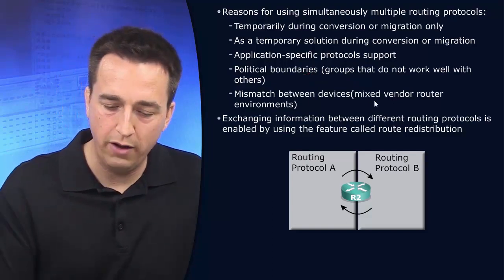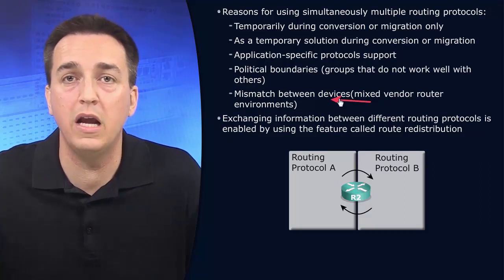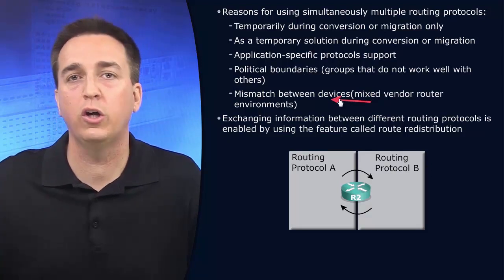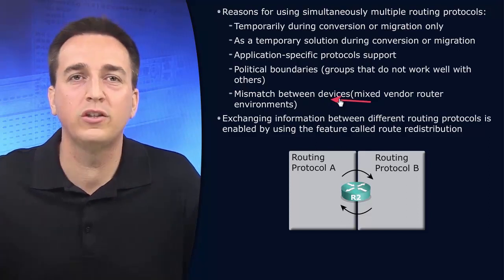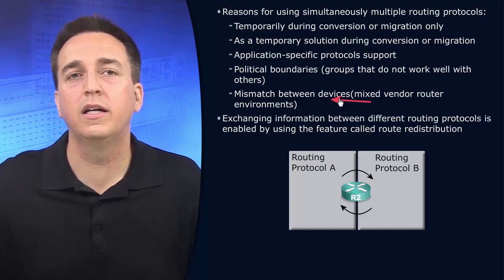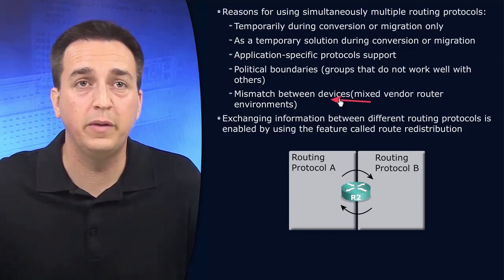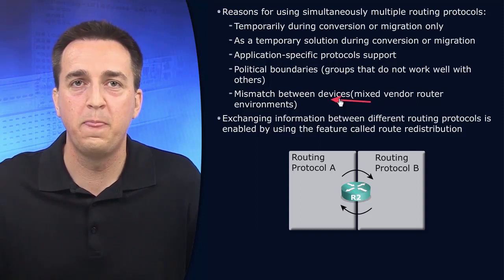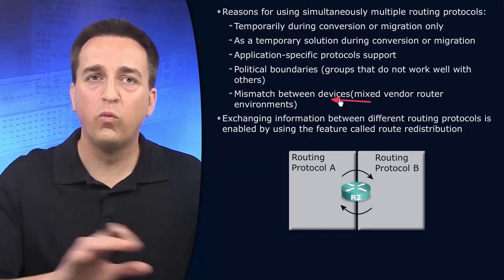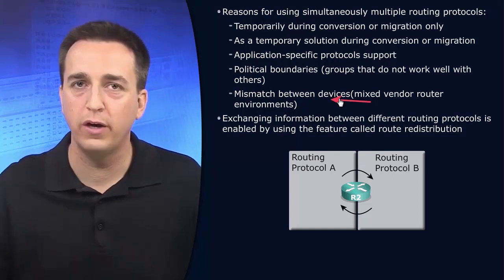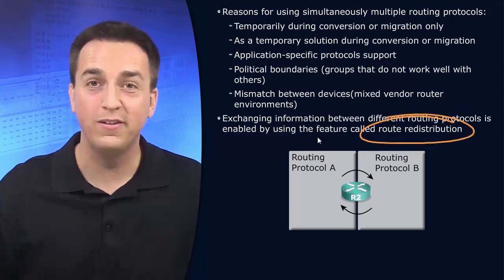You might have routers from different vendors. That vendor's router may or may not support the routing protocol you are currently using in your organization. As a result, they'll perform redistribution so that router can learn about the routes that the other protocol knows about. So in order to exchange this information from one routing source to another routing source, we will be using route redistribution.